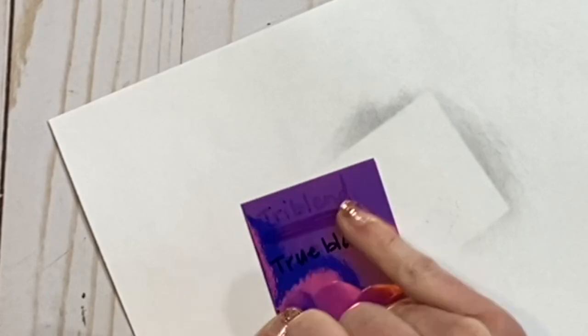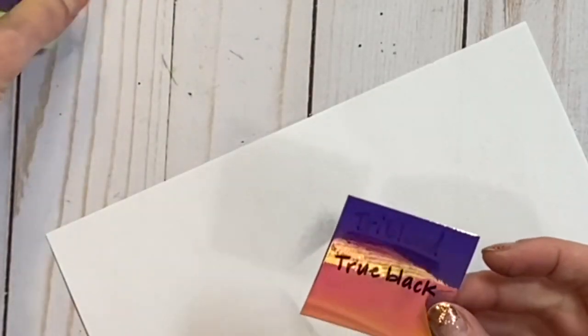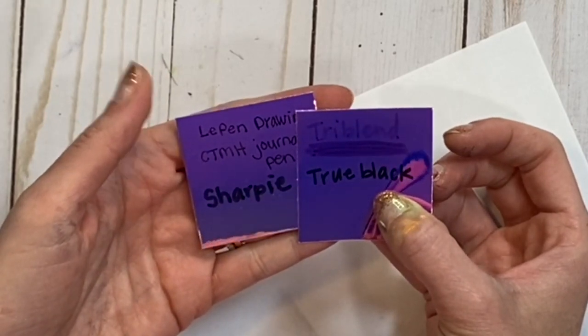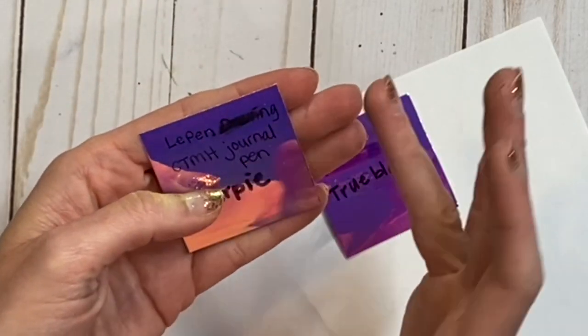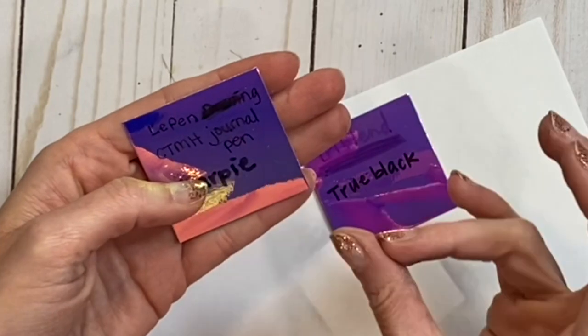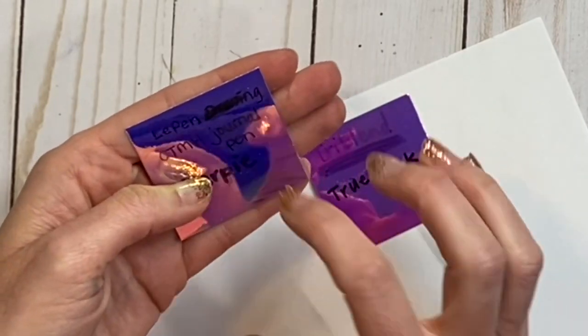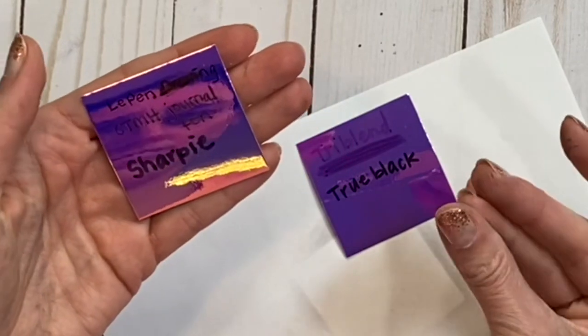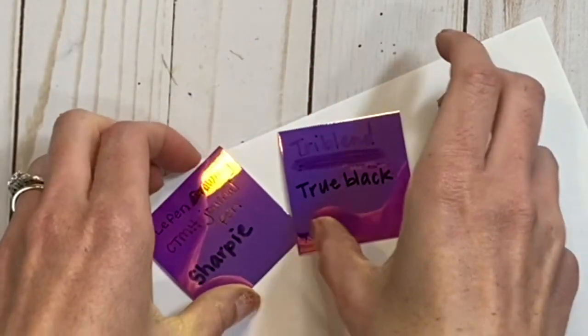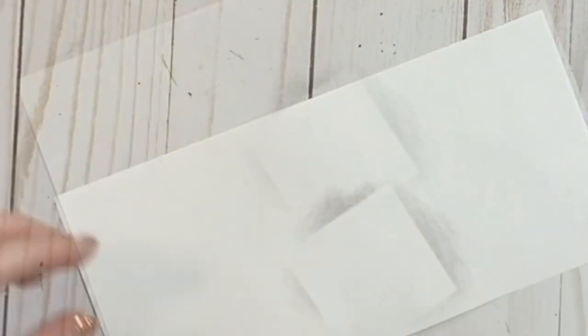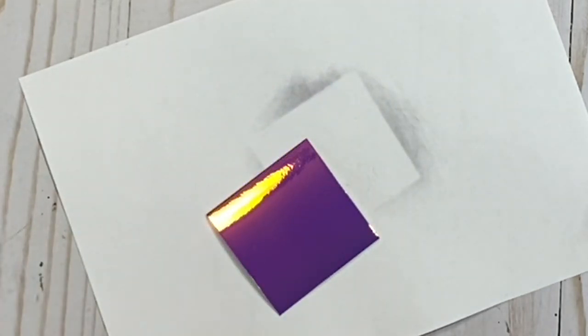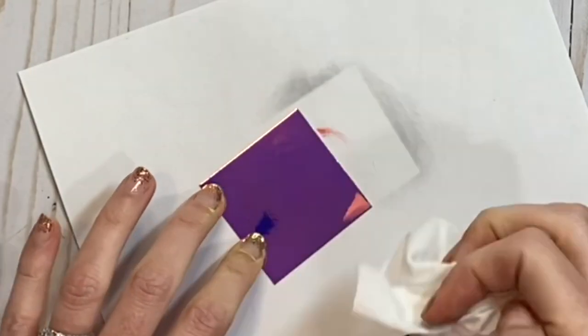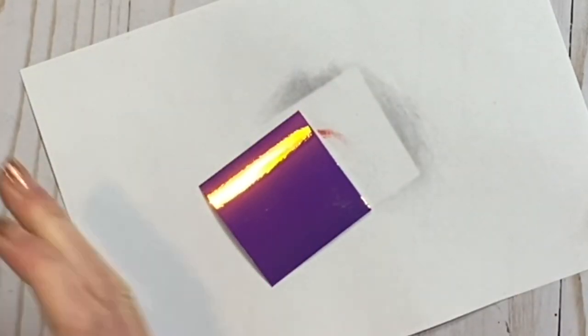Both of those worked similarly as far as how quick they dry, they don't smear, but you can see there the True Black just really looks sharper. Now this is the next day, and the journaling pen and the Le Pen drawing pen are still wet and still smudging. So I actually didn't try heat setting them. I would be curious to know if that helped, but just not the best option for writing on holographic paper.